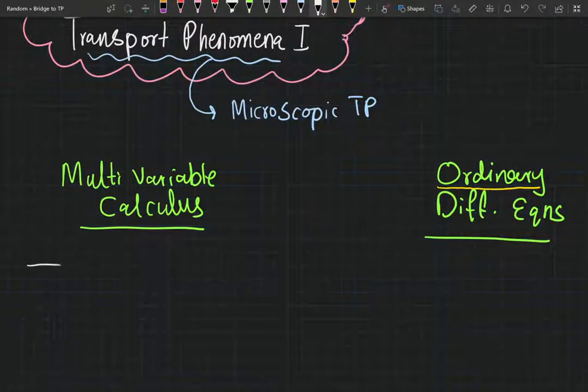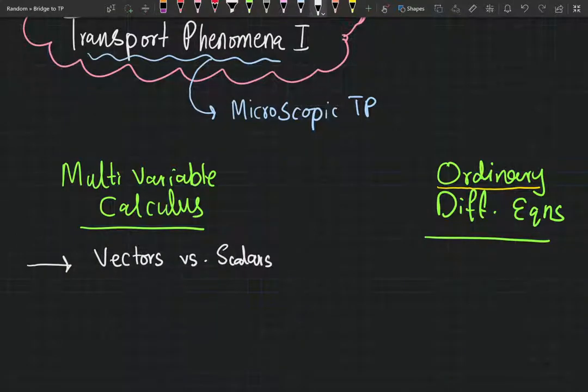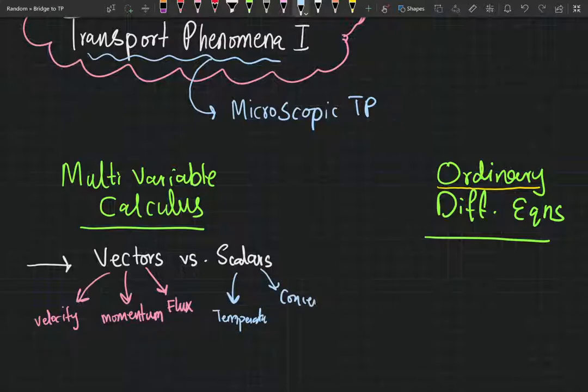In multivariable calculus, we need to know the difference between vectors versus scalars. For those who have taken physics, this should come right off the bat. In transport phenomena, you'll be dealing with vectors like velocity and momentum of the fluid, and all the flux expressions are actually vectors. On the other hand, temperature, concentration, and pressure are all scalars.